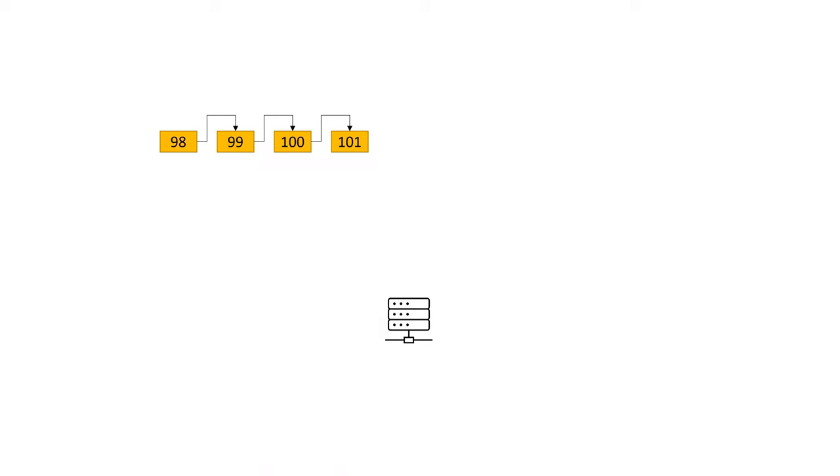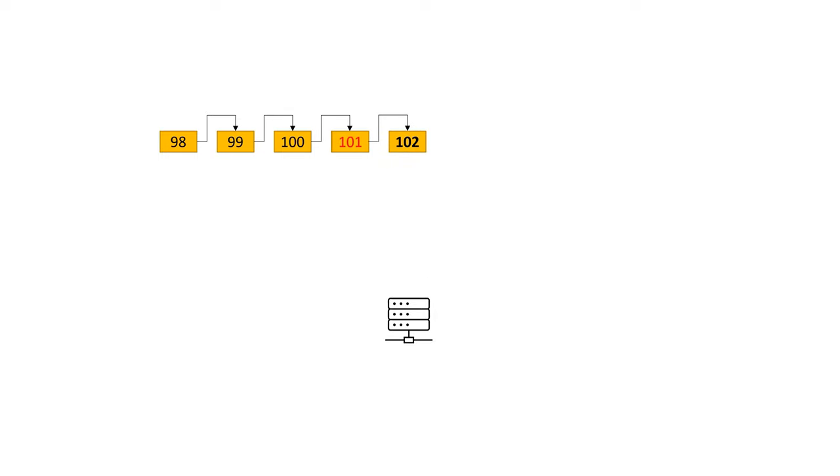When a node decides to reject a block, there can be only one valid reason: it presents an alternative chain to the network that is longer than the existing one. The rule works like this — when a node accepts a block or blocks, it compares them with its version of the chain. If the new ones constitute a longer version, the node adds these blocks, replacing the shorter version of the chain. Of course, it firstly validates these blocks.